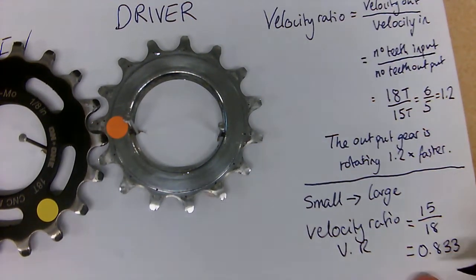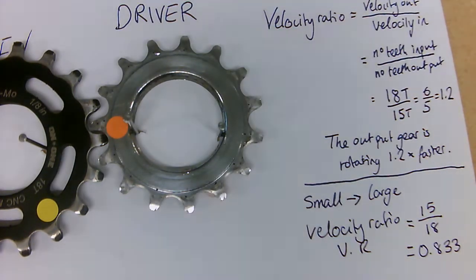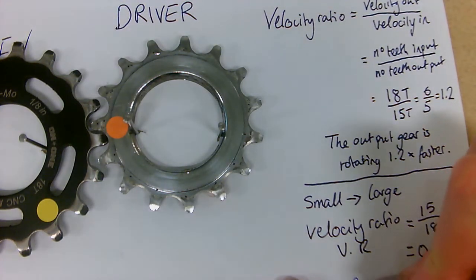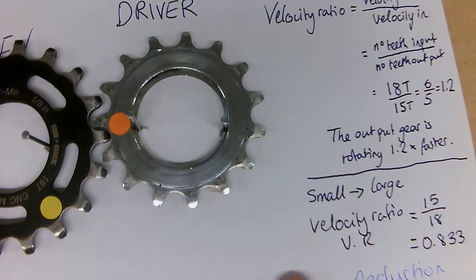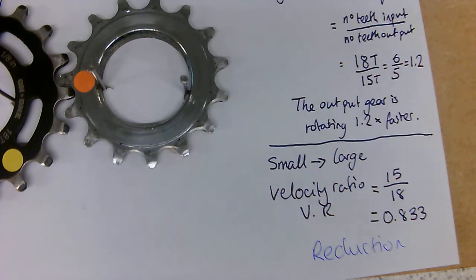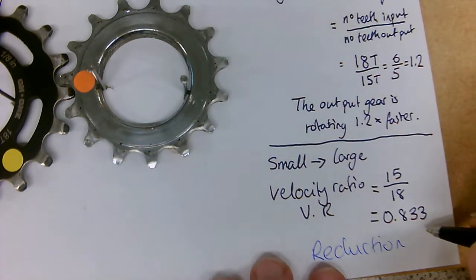It tells us that our output gear is moving about one sixth less fast than our input gear. So this is an example of a reduction gear where it would increase our force but reduce our speed.